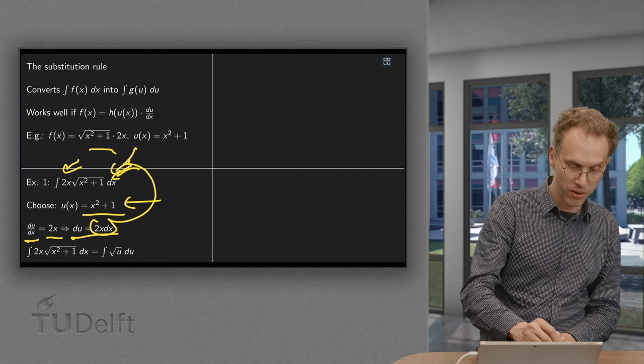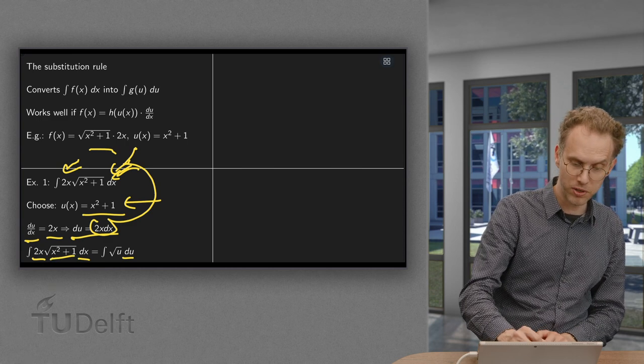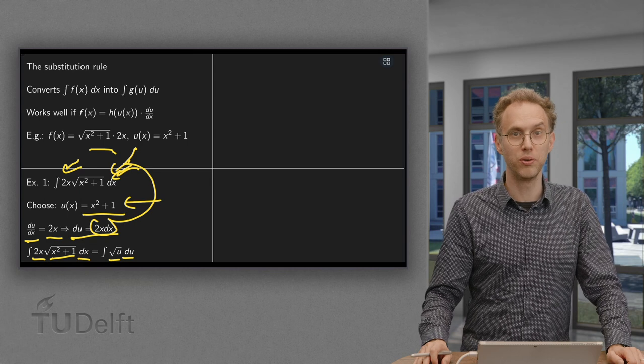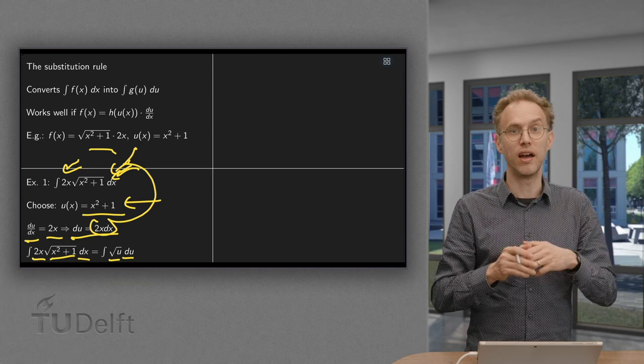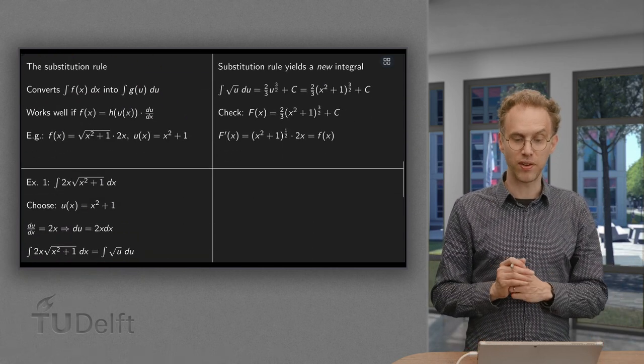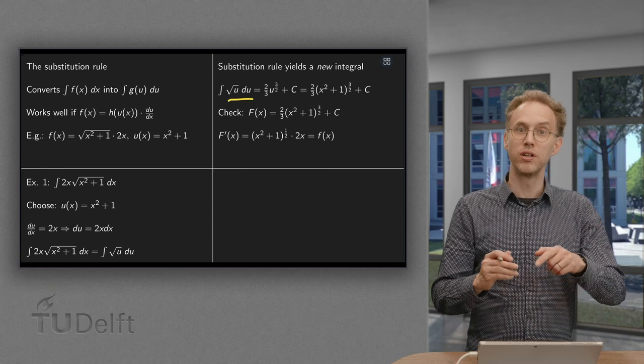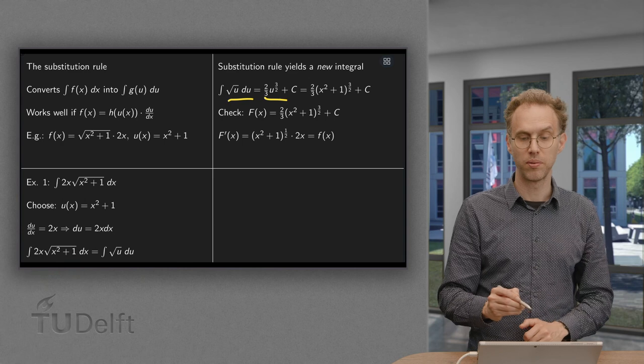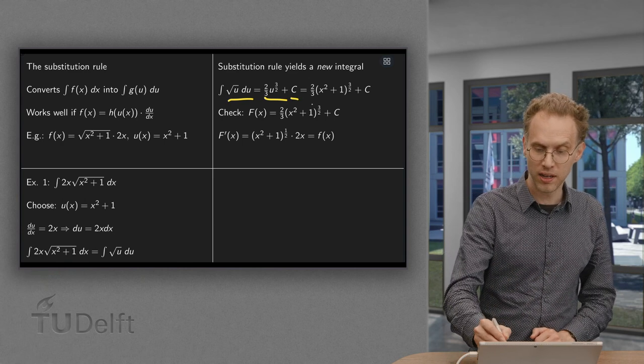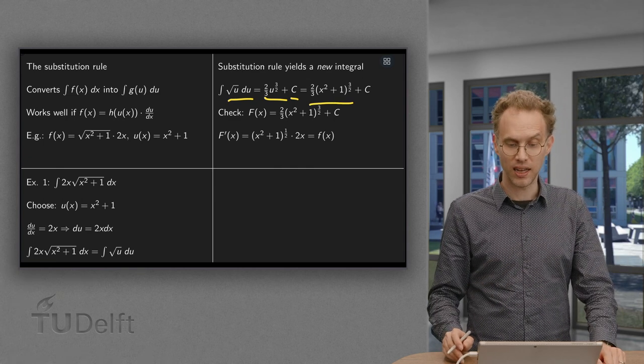So the integral becomes: 2x dx becomes du, and the square root of x squared plus 1 becomes square root of u. So we have a new integral with the integration variable u now, but instead of this long function we only have to compute the antiderivative of u to the power 1/2, and that one is standard. The antiderivative of u to the power 1/2 equals u to the power 3/2 times 2/3 plus an integration constant. And then we substitute back u equals x squared plus 1. So there we have our antiderivative.